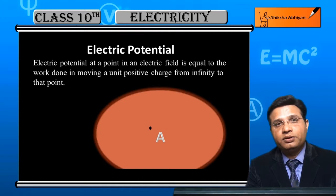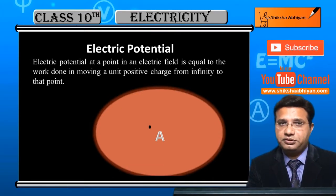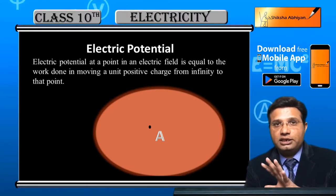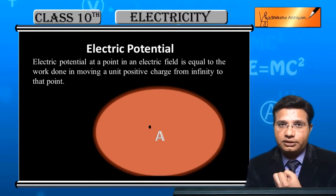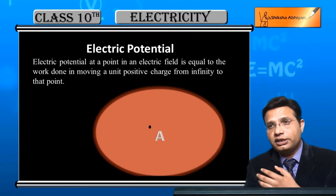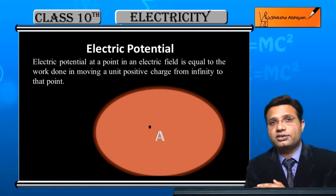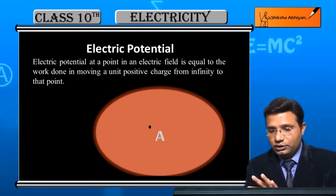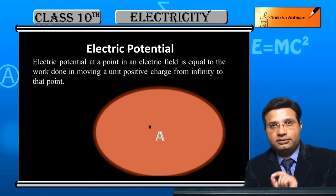Now you can see a circle — this circle is representing an electric field. If there is a charge somewhere, there is an electric field around it. Electric field means that area or space which experiences a force of attraction or repulsion through another charge.